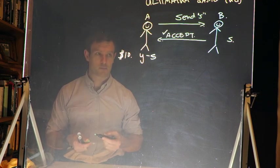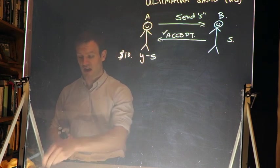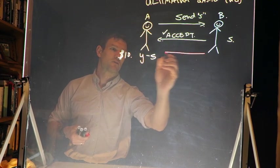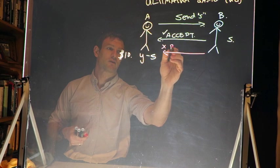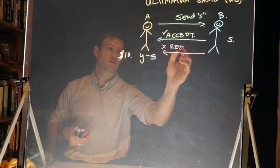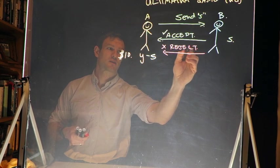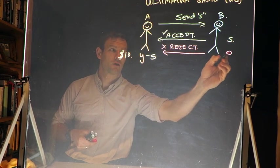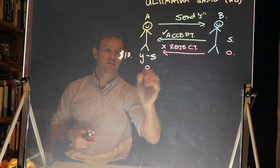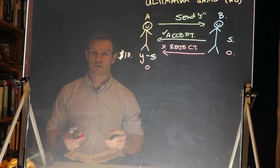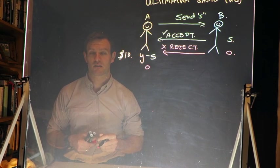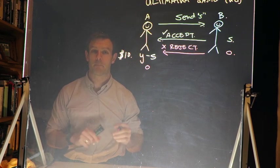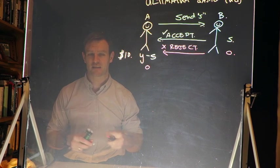Now person B also has the option instead to reject the offer. What happens then if they reject the offer? They're saying, no, I do not like your offer. In which case, with that rejection, B gets zero, and A gets zero. So in the case of a rejection, player B says to A, I am rejecting your offer. As a consequence of rejecting, B gets zero dollars, and A gets zero dollars.